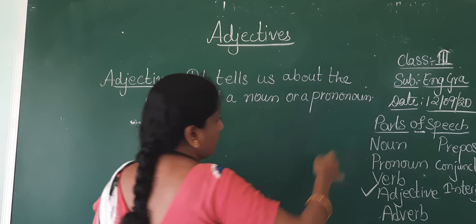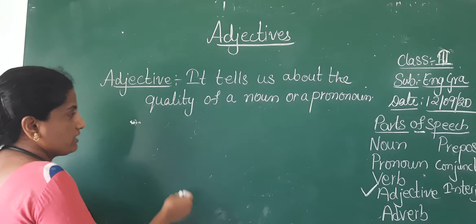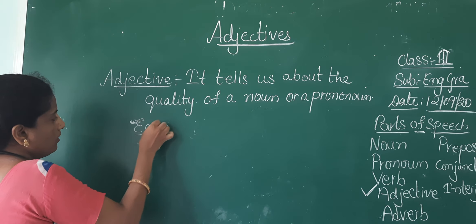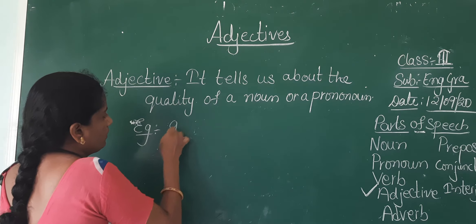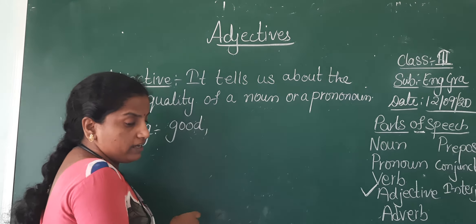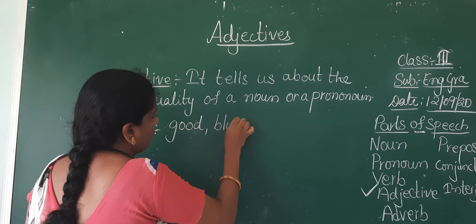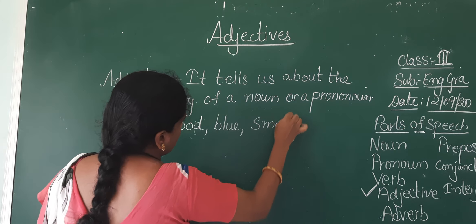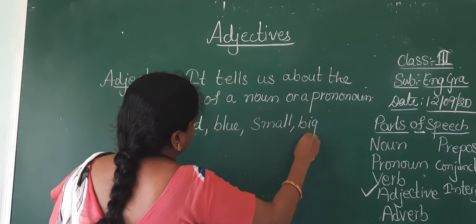Now a few examples of adjectives: good, blue, smaller, big, etc.